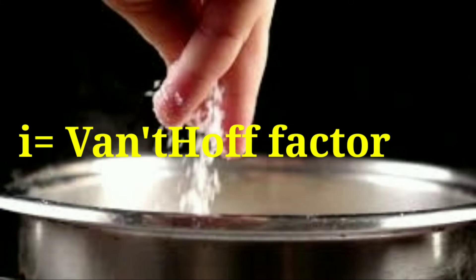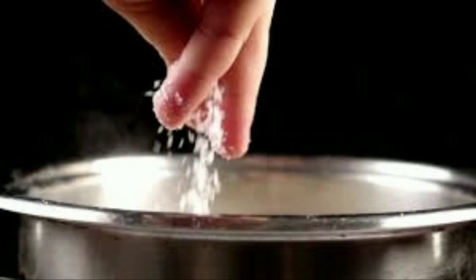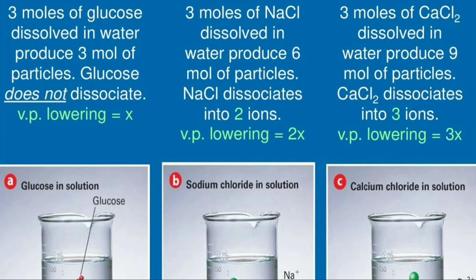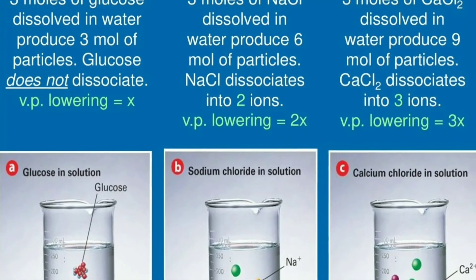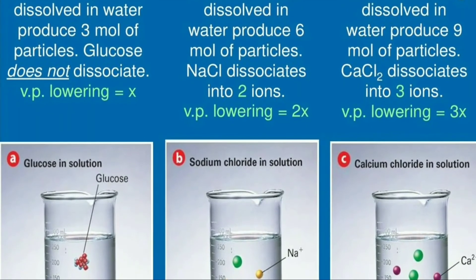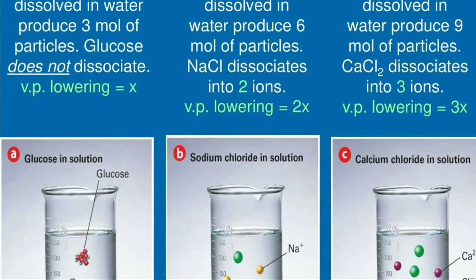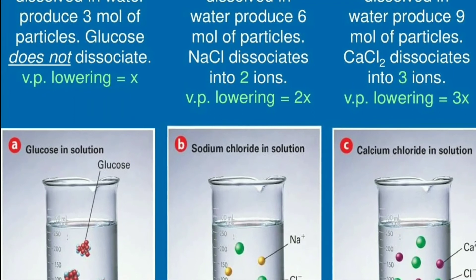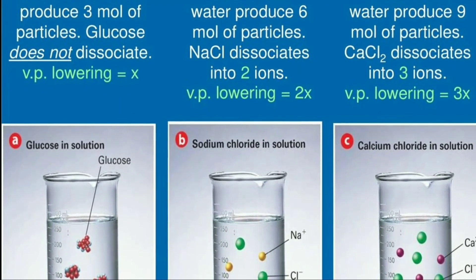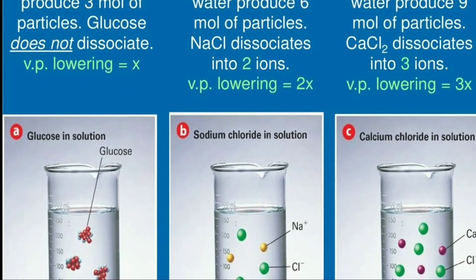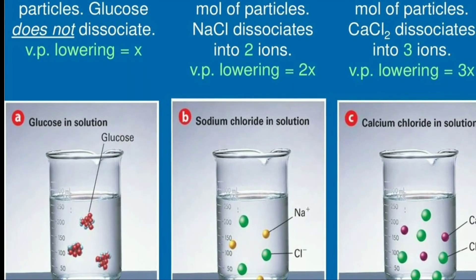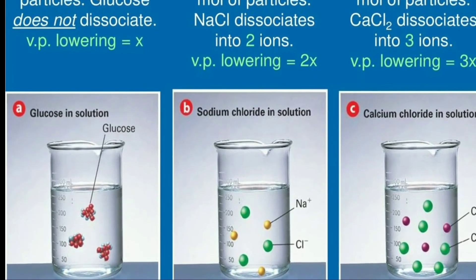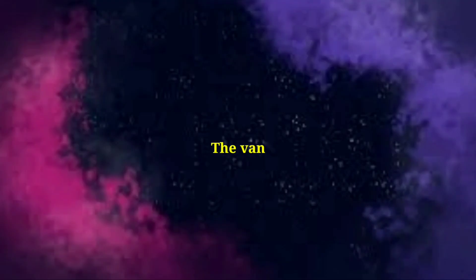If we add sodium chloride, we will check the ions. If you want to check the ions in sugar, sodium chloride gives 2 ions.